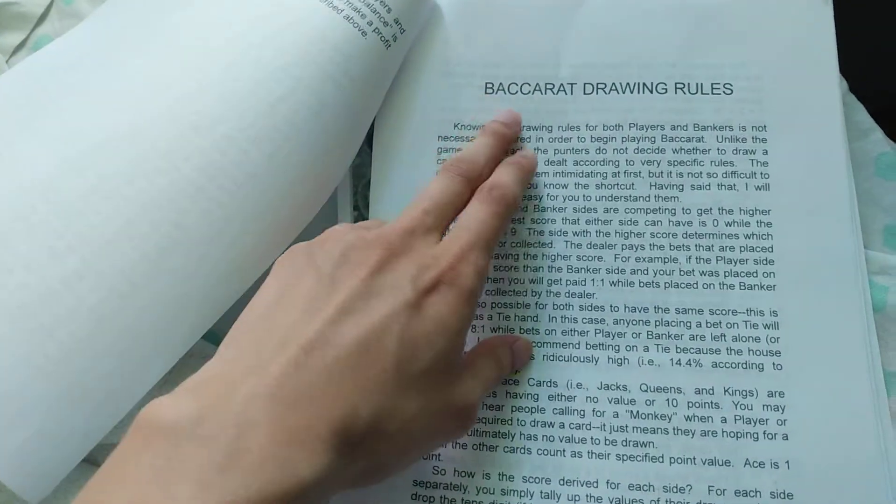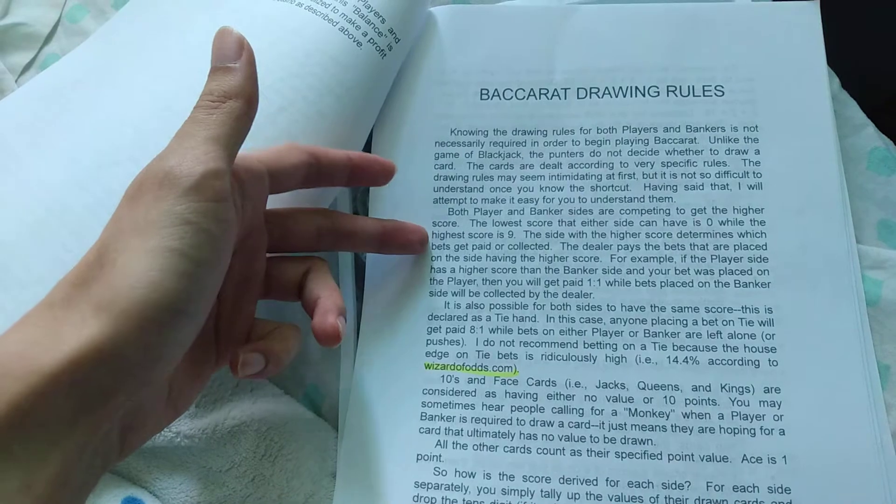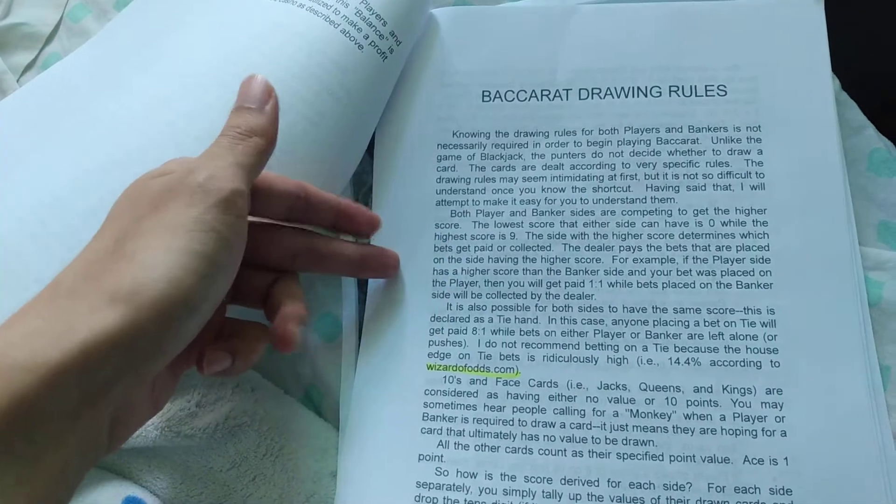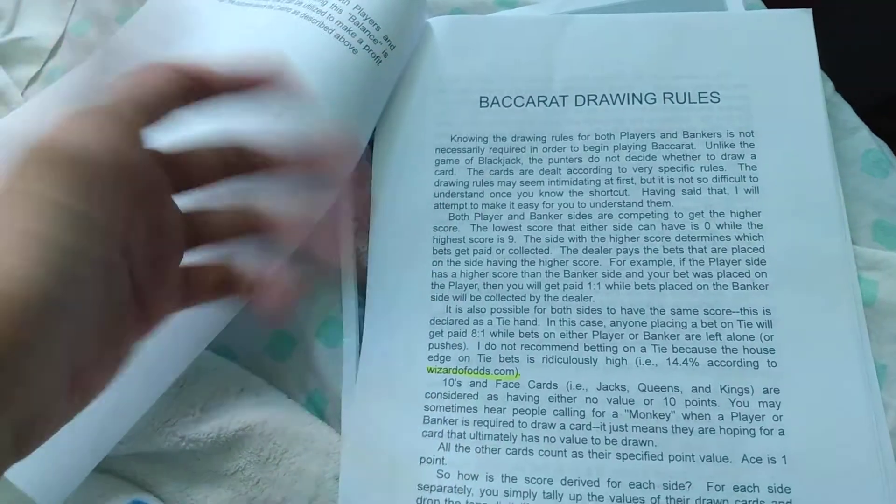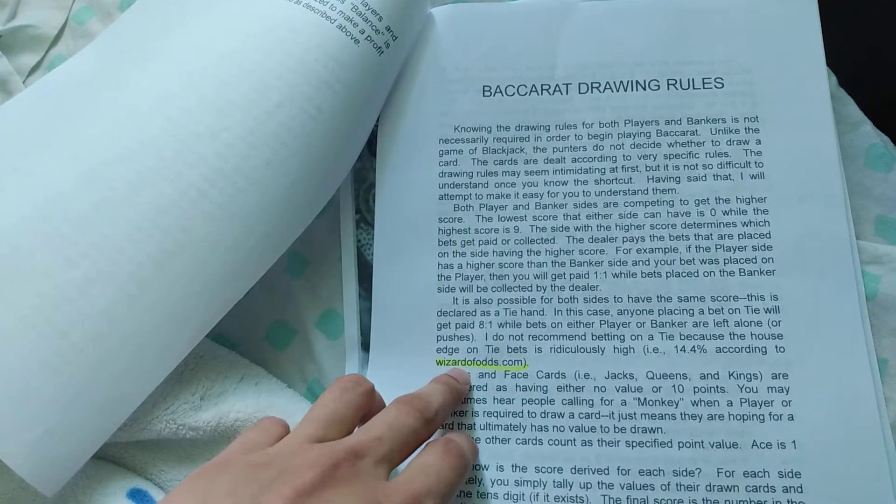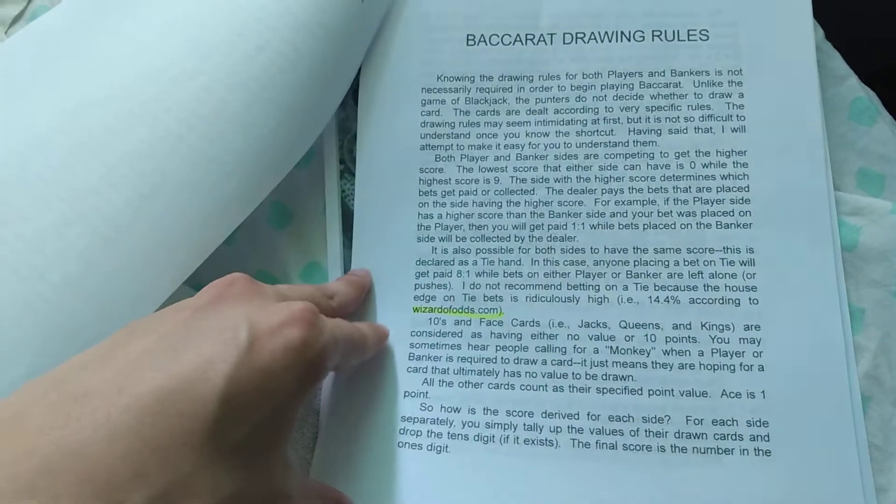And next is describe Baccarat Drawing Rules. And the rules, that's it. Zero is the lowest, nine. That's pretty much basic. Those are basic, common. And the only, see, one time they cited a source, there's a Wizard of Oz, which is common place.